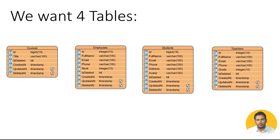We also want to have a teachers table with id, full_name, email, phone, grade, and again is_deleted, created_at, updated_at, deleted_at. It's important for us to have all of the id, is_deleted, and the three timestamps in all of our entities and tables.